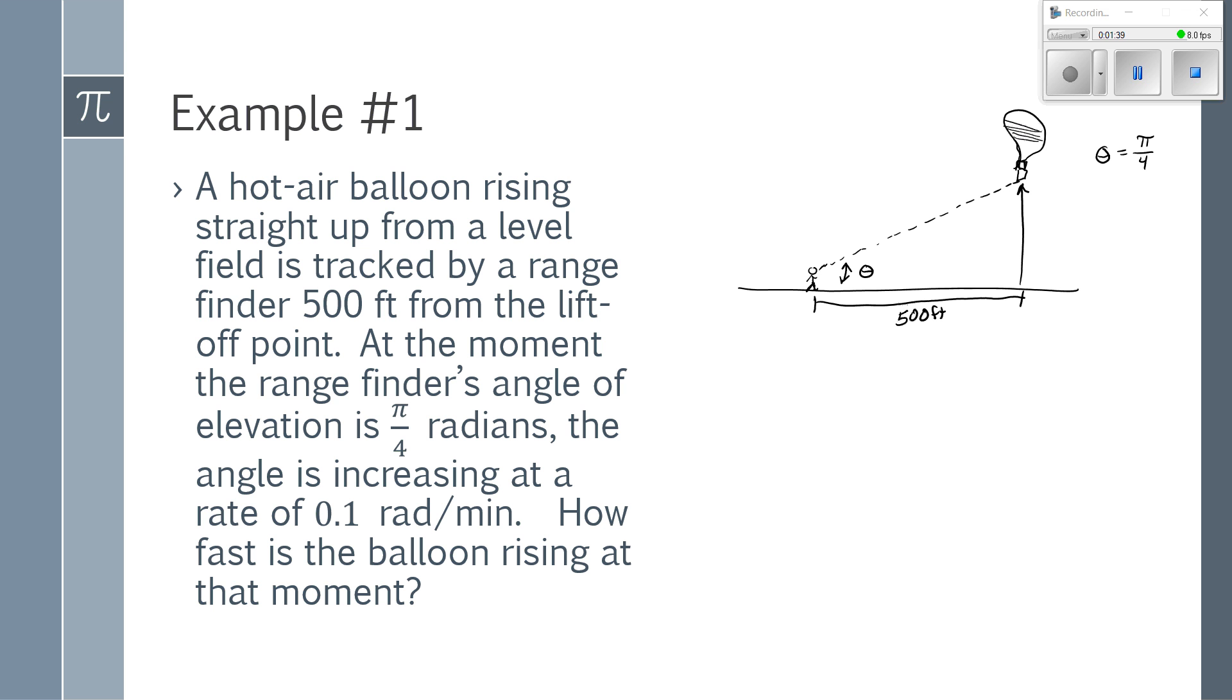I'm then told the angle is increasing at a rate of 0.1 radians per minute. So that is a rate of change of the angle, which in calculus would be dθ/dt. And it's increasing, so this is going to be a positive rate of 0.1 radians per minute.